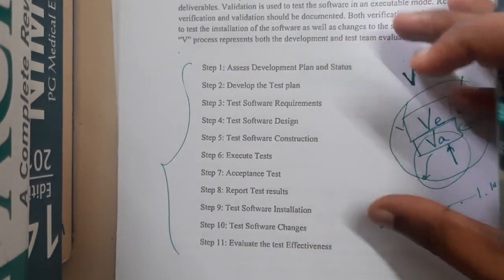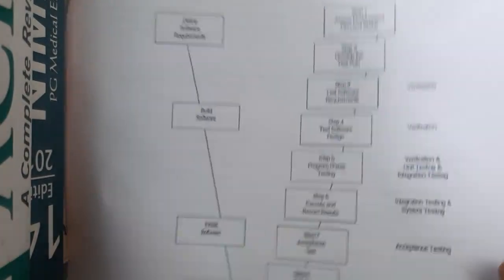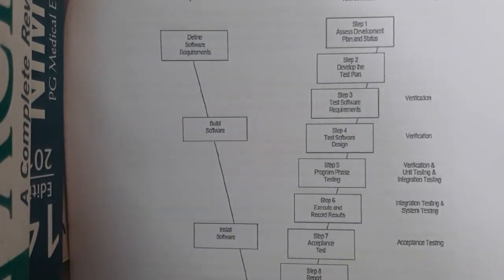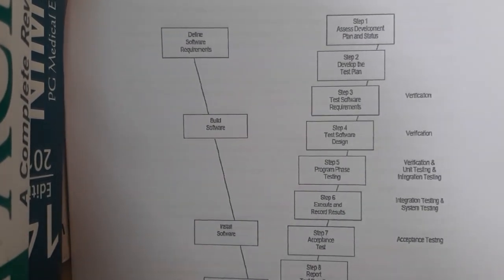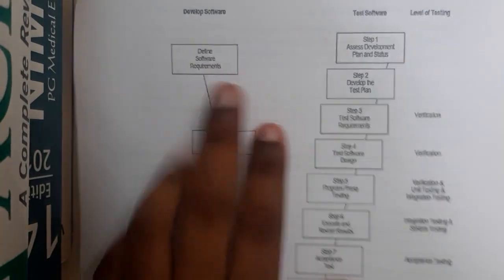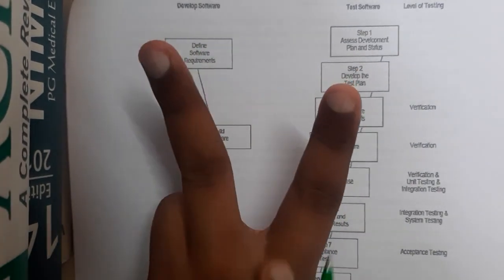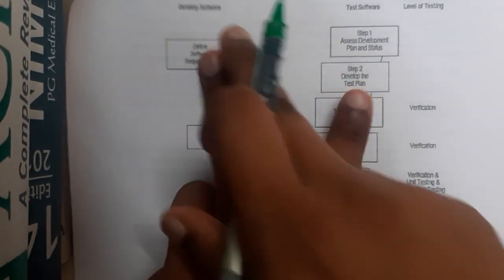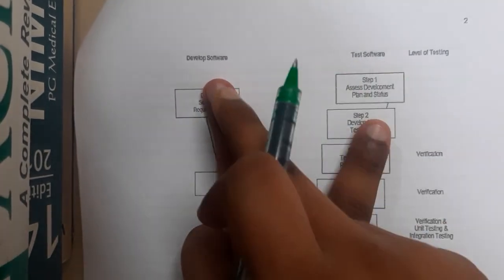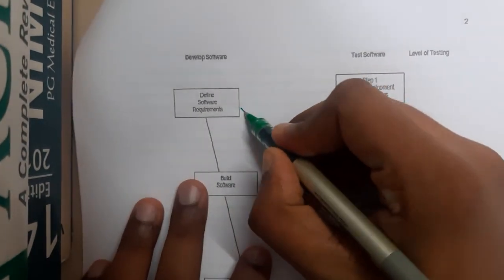Please try to remember the exact names, because if you remember them you can draw them in the diagram and also explain them. I told you both the development process and the testing process will be shown in the V-shape. The left side shows the development of the software, whereas the right side shows the testing of the software.